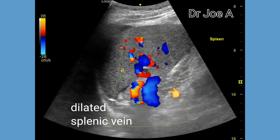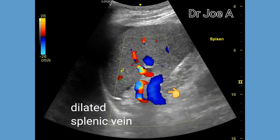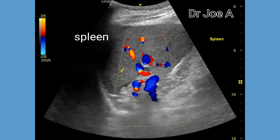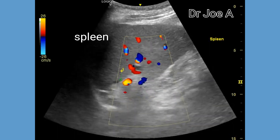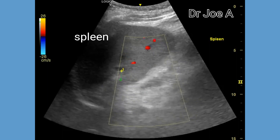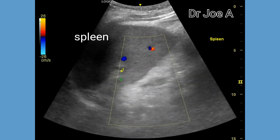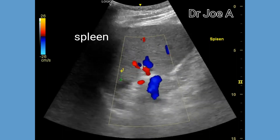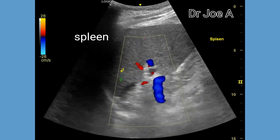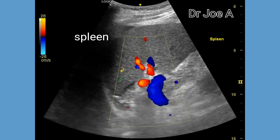The splenic vein is seen in blue color here. Adjacent to the splenic vein is the splenic artery, seen in red. There is no evidence of splenic varices in the splenic hilum region — this is one good sign that we see in this patient.